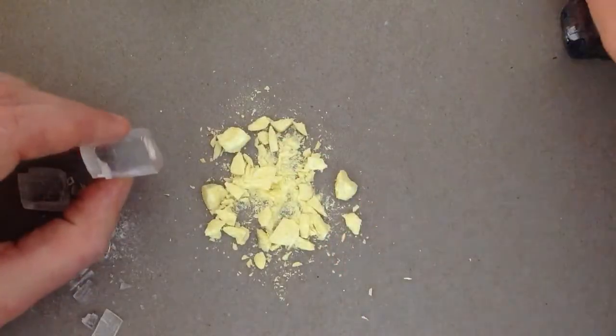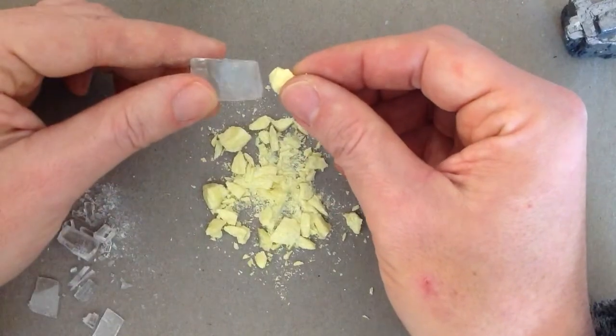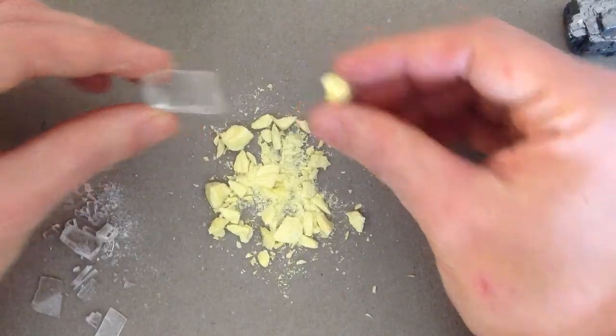So cleavage and fracture are completely different ways in which a mineral is going to break. Flat sides for cleavage, uneven sides for fracture.